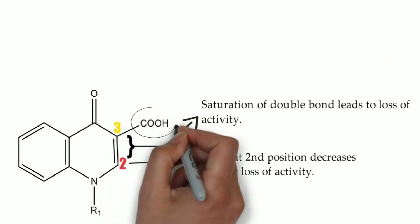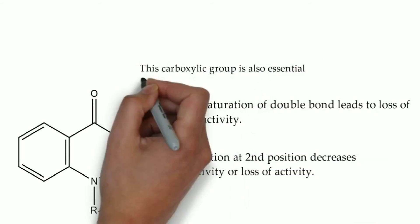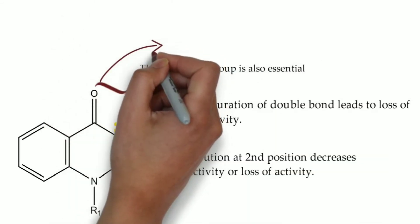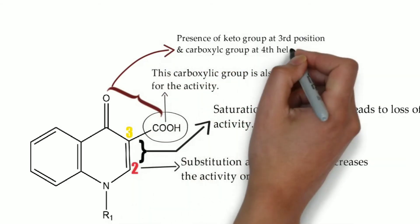We see the third position, so one carboxylic group is present. This carboxylic group is essential for the activity. And one keto group is present at the fourth position. This keto group and carboxylic group is essential for the DNA gyrase activity.